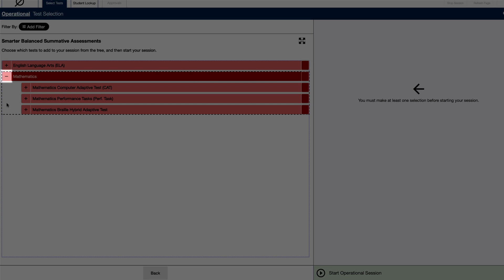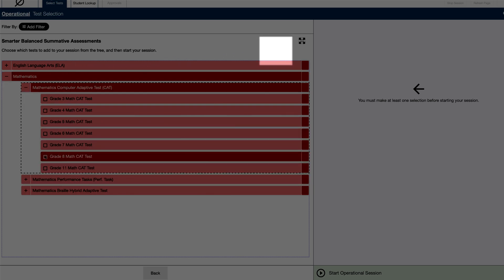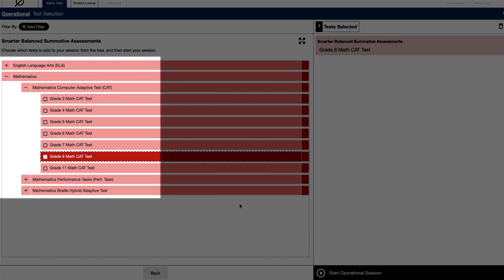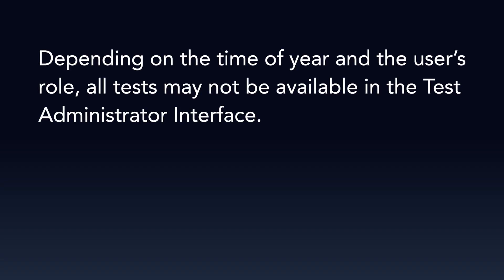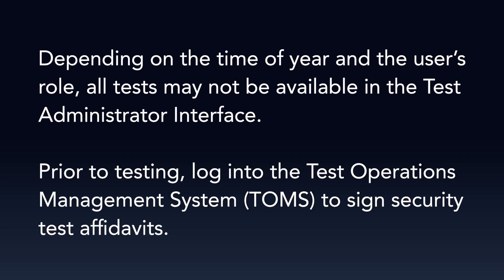To expand the list of all tests, select the Expand All Outward Arrows icon. To select individual tests, mark the checkbox for each test to be included. Depending on the time of year and the user's role, all tests may not be available in the Test Administrator interface. All users who will administer tests must log into the Test Operations Management System, or TOMS, to sign security affidavits. If an affidavit remains unsigned, only interim assessments will be visible on the Test Selection screen.